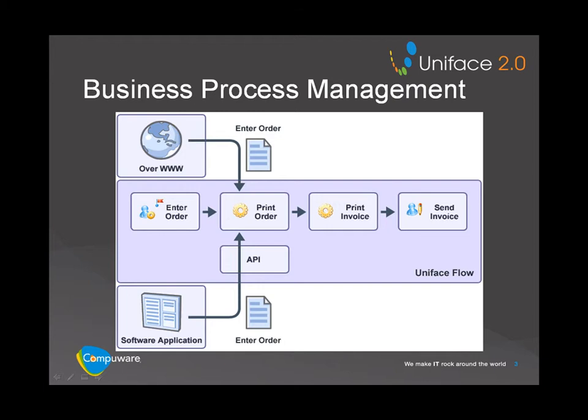During deployment, UnifaceFlow executes the process model and automatically creates the tasks belonging to that process in a sequence defined by the model. Tasks can be created conditionally and can be assigned to actors — i.e., users of the system — but they can also be executed automatically. Applications that are needed to execute a task are linked to the task.